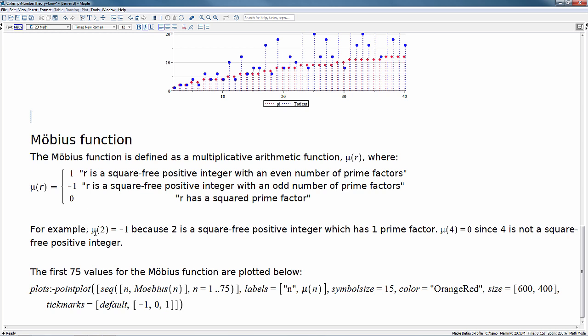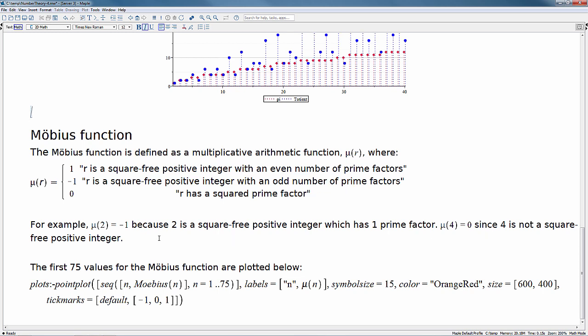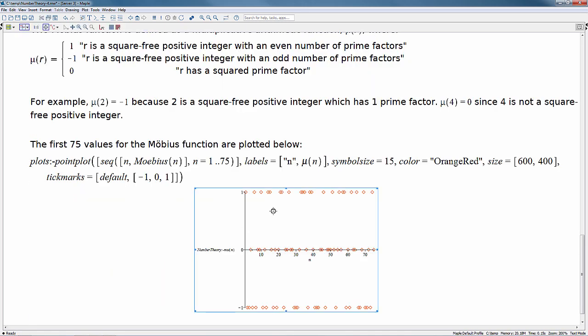So for example, mu of 2, or the Mobius function of 2, is equal to minus 1 because 2 is a square free positive integer which has one prime factor. Mu of 4 is 0 since 4 is not a square free positive integer. The first 75 values for the Mobius function can be plotted in the following chart. So we can see here, as we move across, we have all the values from 0 to 75 at these three discrete levels. So we have 1, 0, and minus 1.